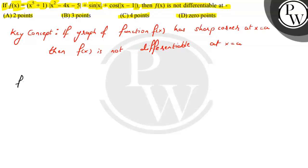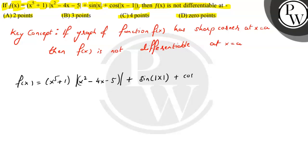The given function is f(x) = (x⁵ + 1)|x² - 4x - 5| + sin|x| + cos|x| - 1. The differentiability of f(x) will depend on the functions (x⁵ + 1)|x² - 4x - 5|, sin|x|, and largely on cos|x| - 1.